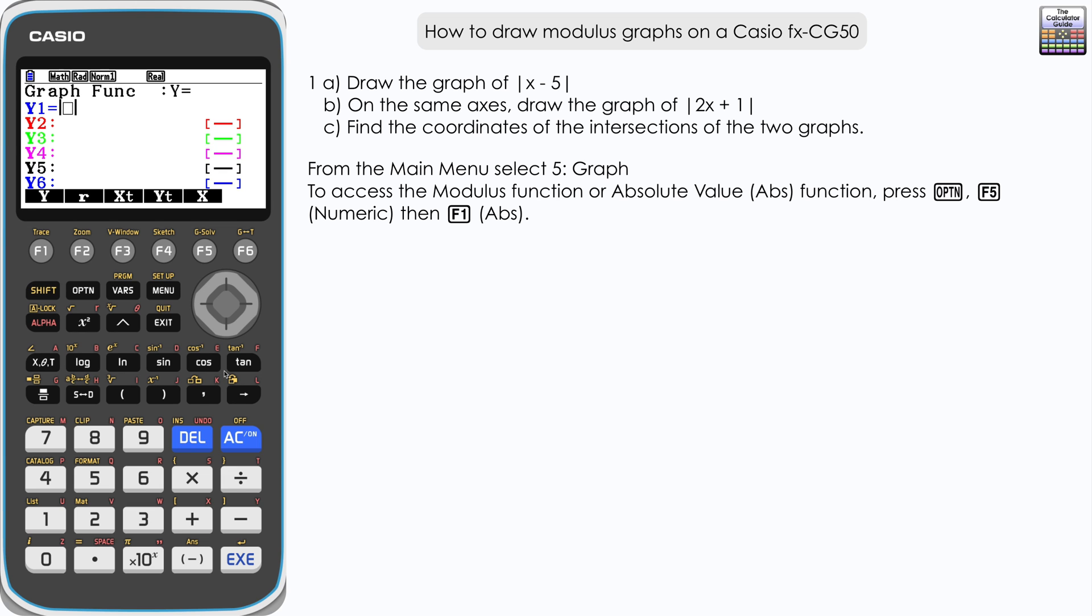You can see the two bars there to input our modulus function. In there we want to write x minus 5 and execute. Let's take a look at the graph, it's F6 for draw.